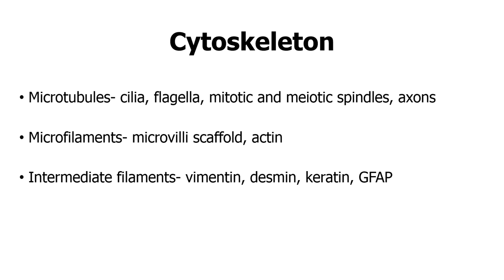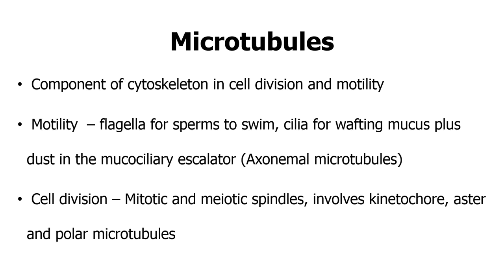Today we'll discuss microtubules. Microtubules are the systems that allow cell division and motility to occur. With regards to motility, you have the movement of sperm using the flagella to swim — the flagella is made up of microtubules. The cilia found in the respiratory epithelium, used to waft mucus and dust particles upwards in what you call the mucociliary escalator, is also made up of microtubules. Microtubules found in cilia and flagella collectively are known as axonemal microtubules.